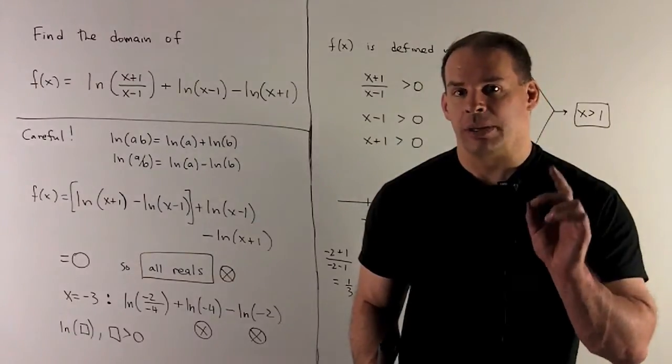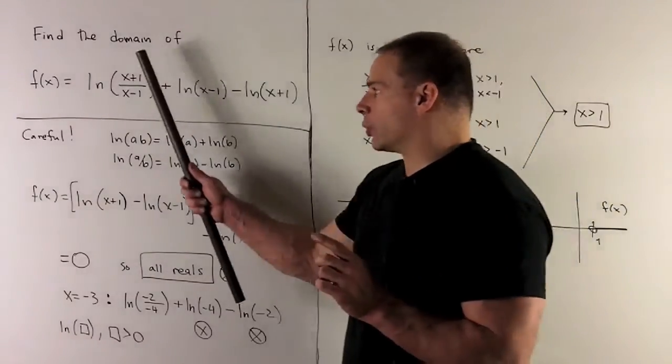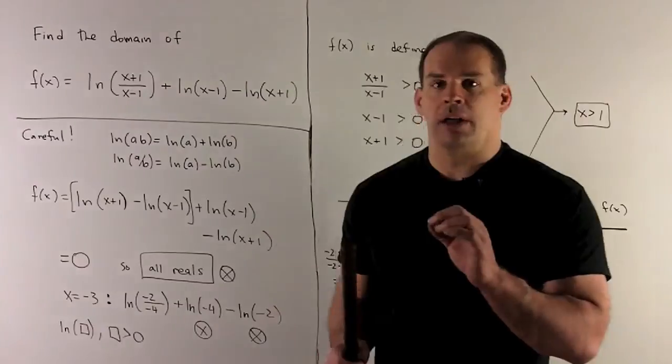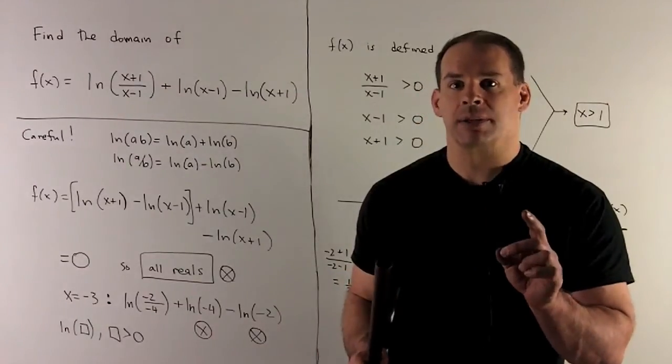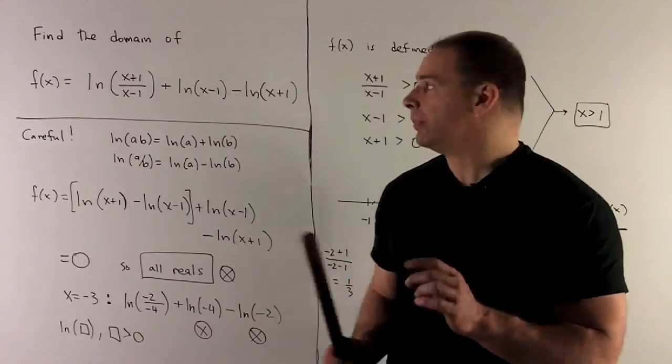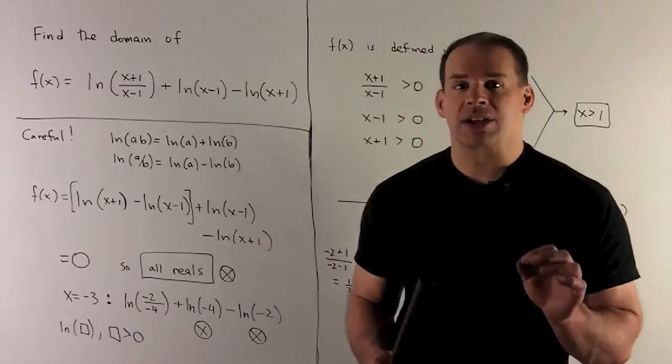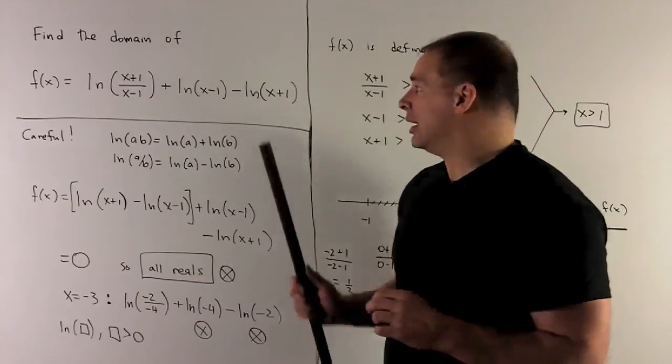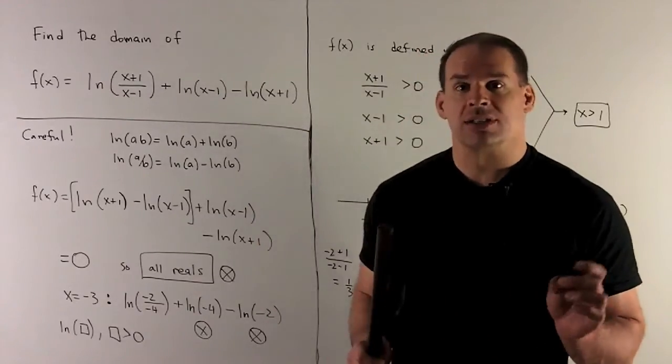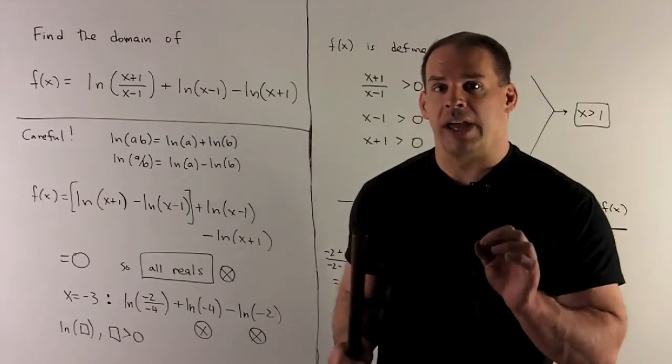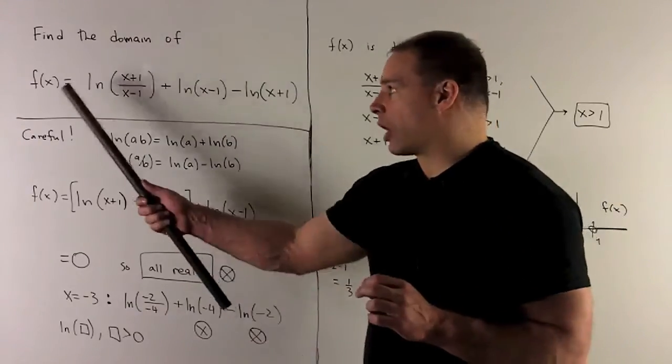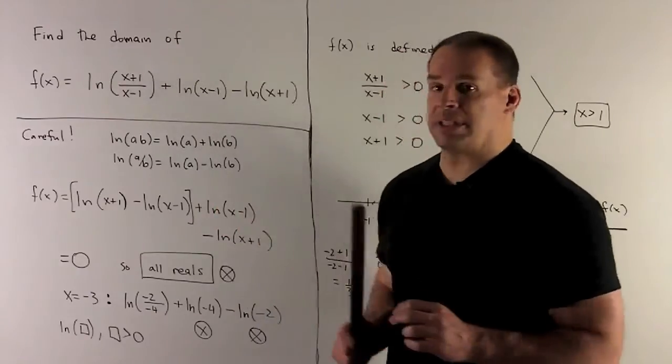The idea is we're going to have three boxes here. First one is going to be (x+1)/(x-1) in the box, set that greater than 0. (x-1) in the box, set it greater than 0. (x+1) in the box, set it greater than 0. So it's going to give me three equations, and for a function to work, all three have to work at the same time.